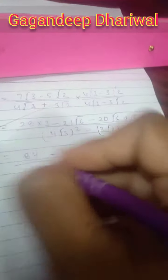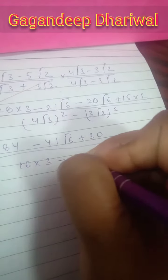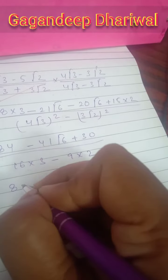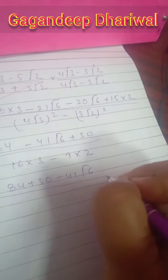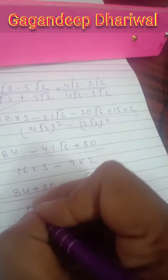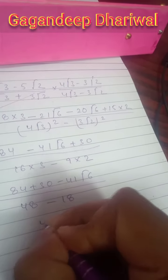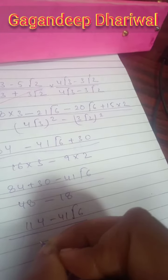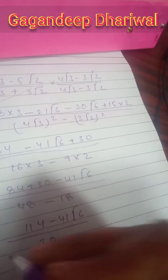And 15 times 2 is 30. Now 4² is 16 times 3 minus 3² is 9 times 2. So now 16 times 3 equals 48 minus 9 times 2 is 18. So 84 plus 30 becomes 114 minus 41√6, and 48 minus 18 becomes 30. This is your answer.